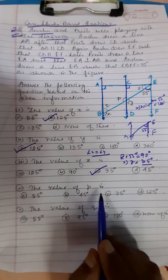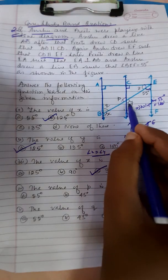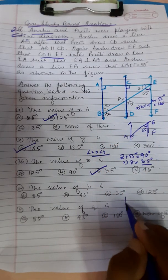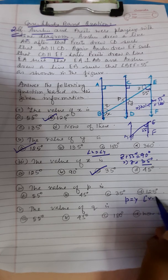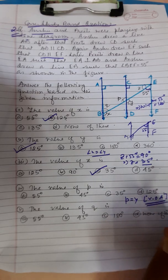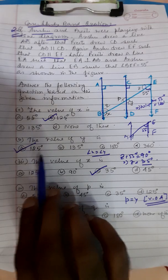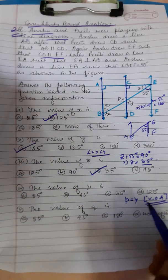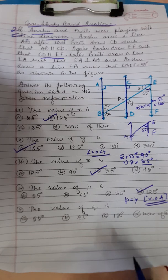The value of P: P is the vertically opposite angle to Y. Vertically opposite angles are equal, so P equals Y equals 125 degrees. The correct option is 125.